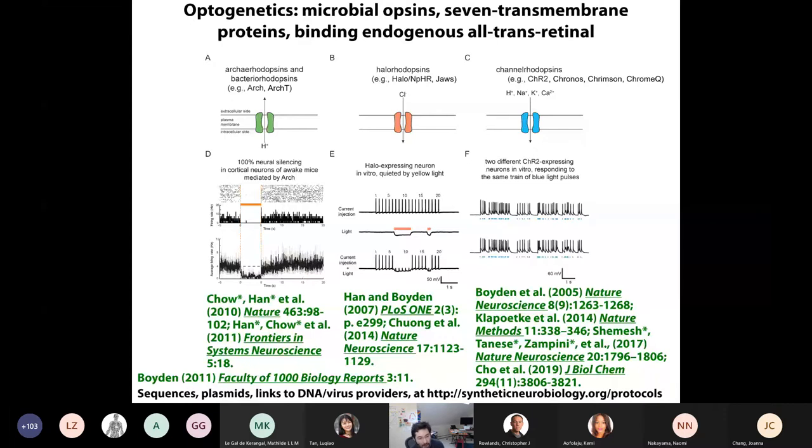And to make a long story short, we were just extremely lucky. These molecules just out of the box were safe enough, fast enough, and powerful enough to mediate neural control. Amazingly, mammalian neurons even seem to, I don't know, we still don't know why or how, but they make that all transretinal, the chemical that these molecules need to sense light. I mean, how lucky can one field get, right?